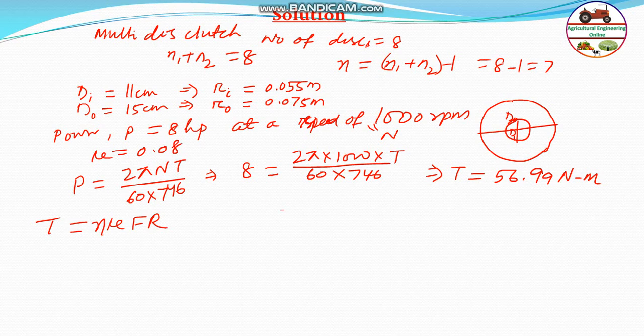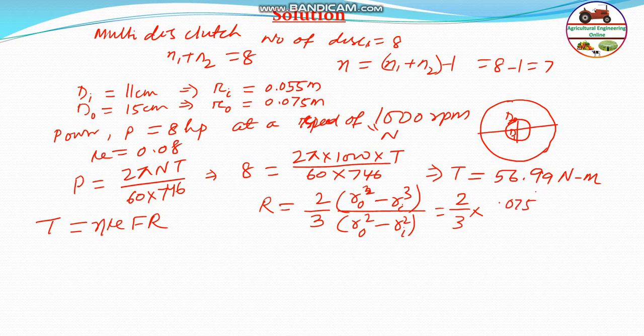The mean radius of the clutch should be calculated as R = (2/3) × (Rₒ³ - Rᵢ³)/(Rₒ² - Rᵢ²). Substituting the values: R = (2/3) × (0.075³ - 0.055³)/(0.075² - 0.055²).